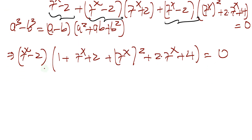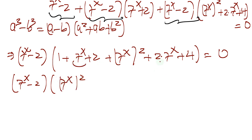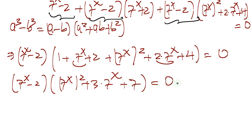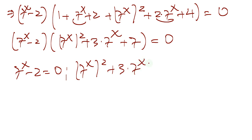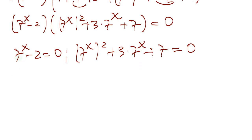Let me write this again and organize the terms. Inside the bracket we have 7 to the x squared, plus (1 + 2) = 3 times 7 to the x, plus (1 + 2 + 4) = 7. So this is: (7 to the x minus 2) times (7 to the x squared plus 3 times 7 to the x plus 7) equals 0.